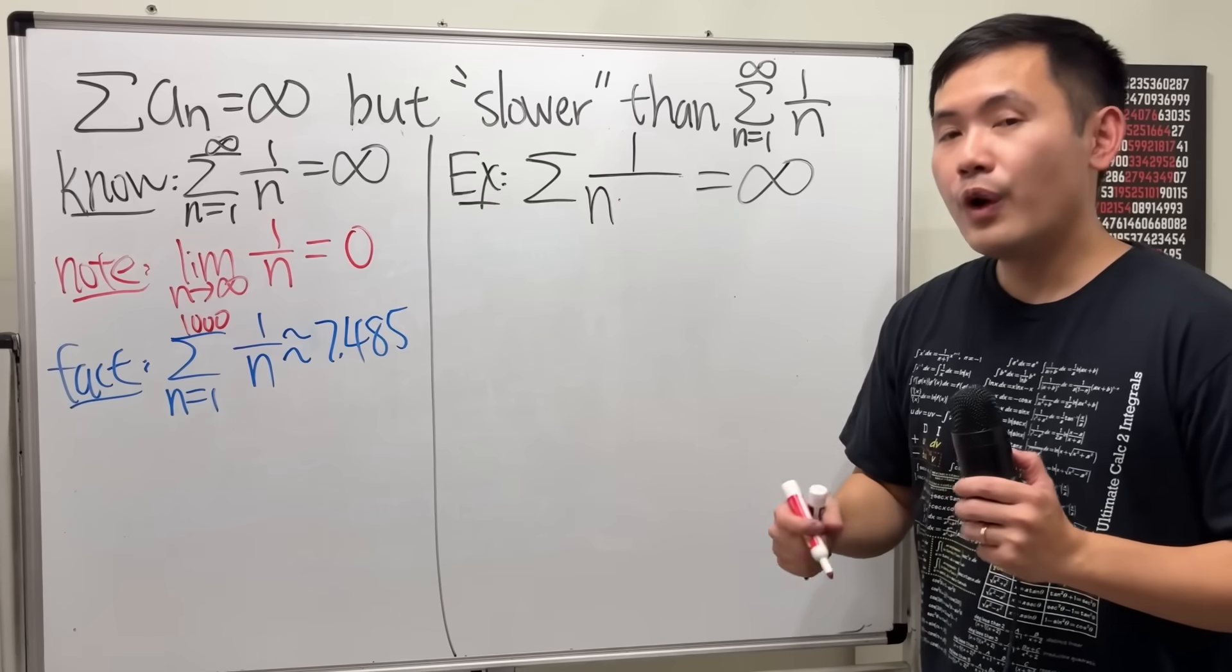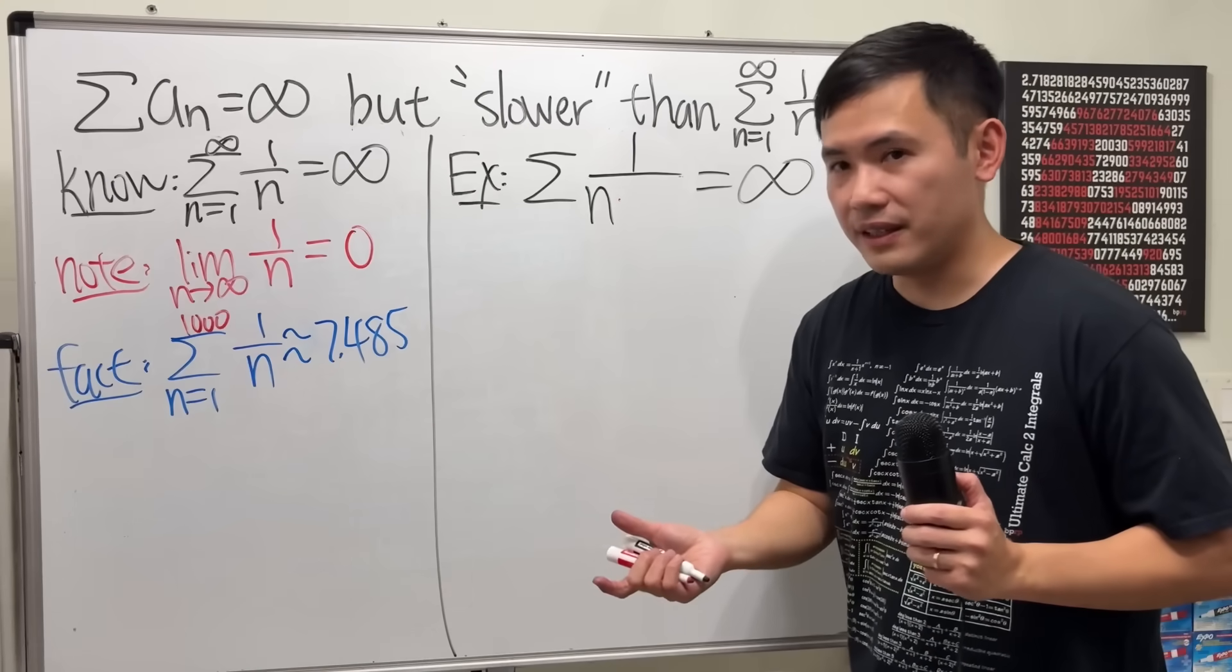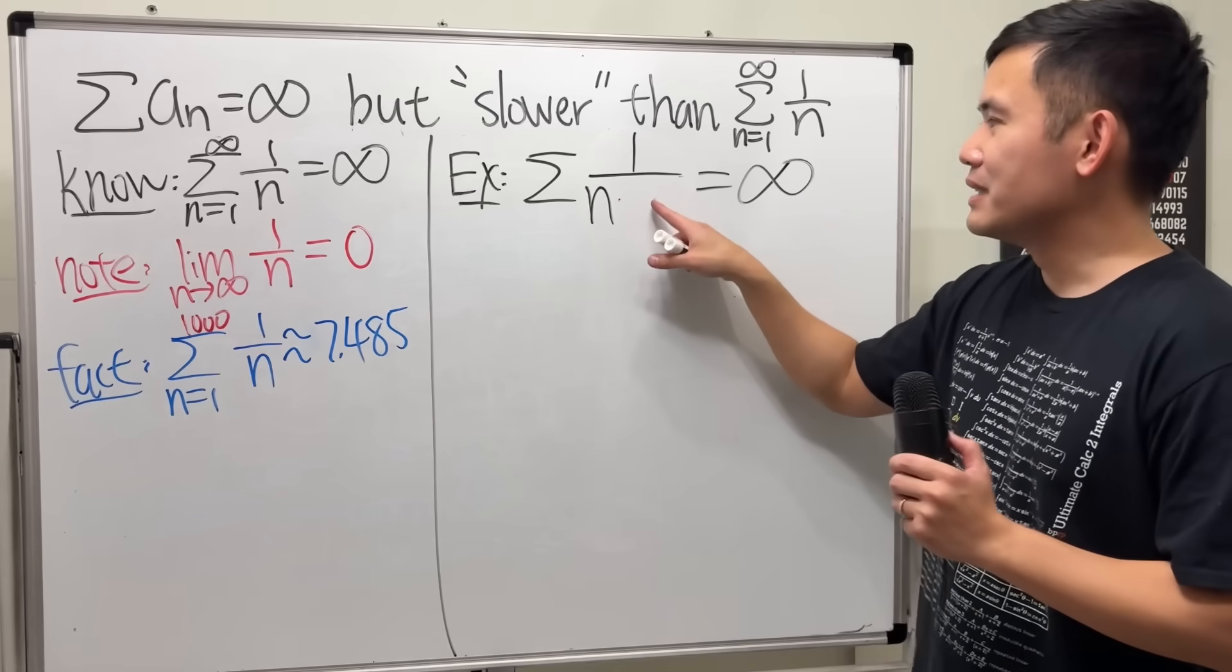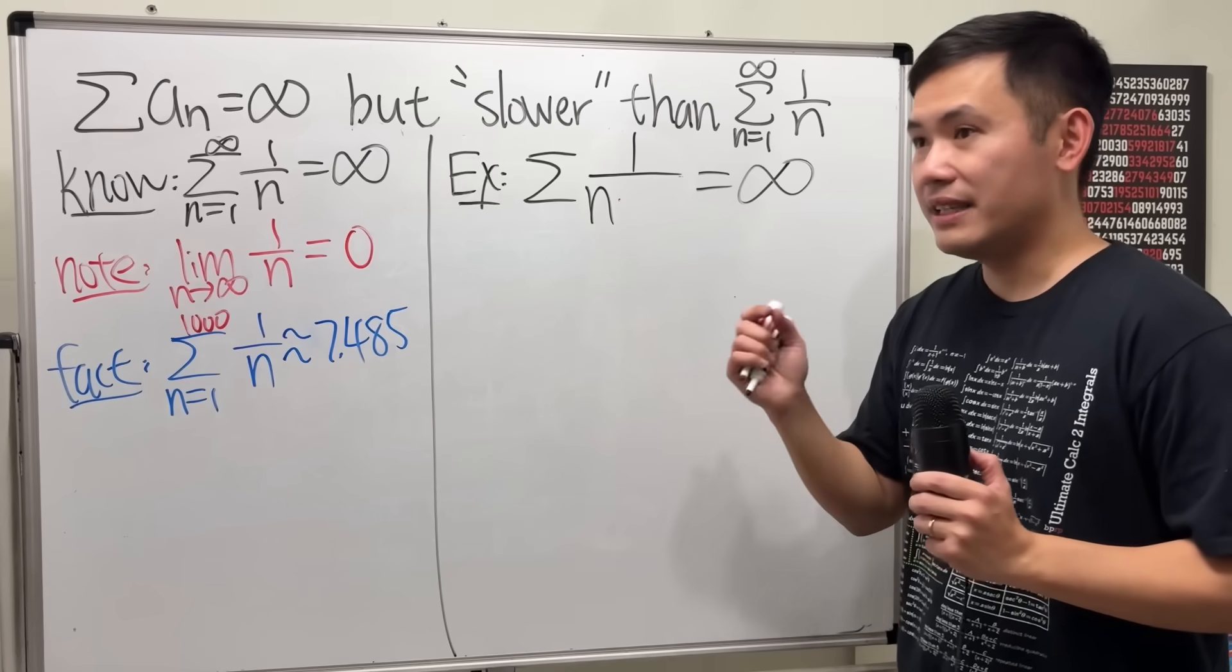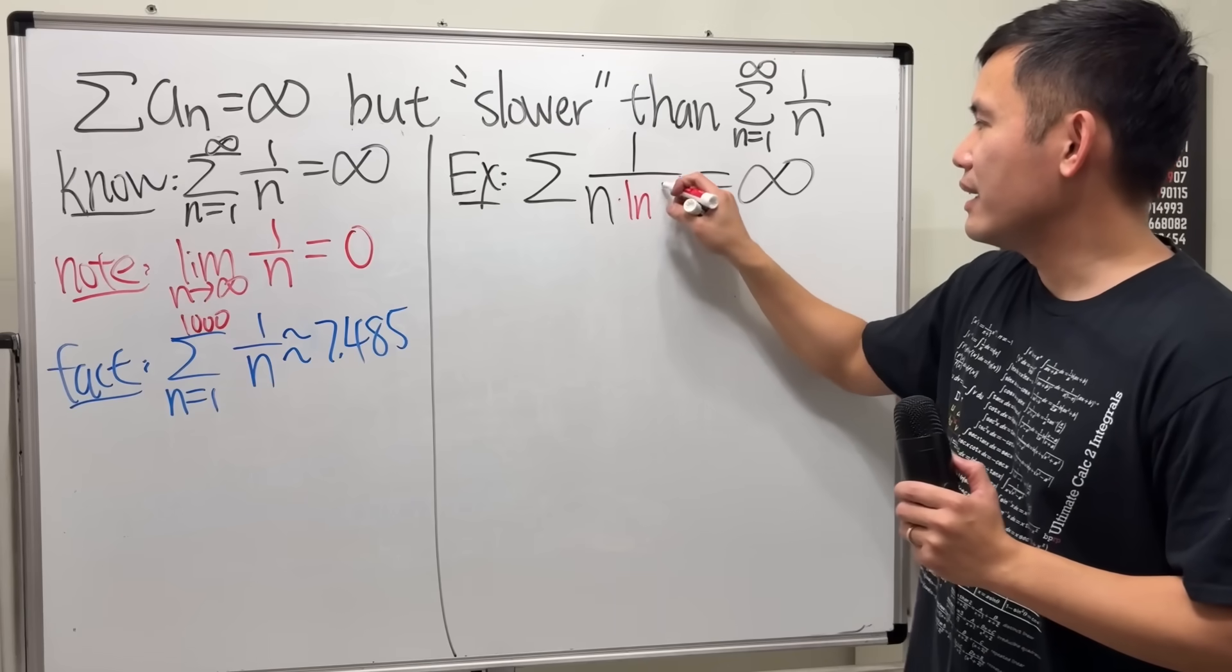We are going to pick a function that also goes to infinity but it's smaller than n. An example for that is the natural log, ln(n).